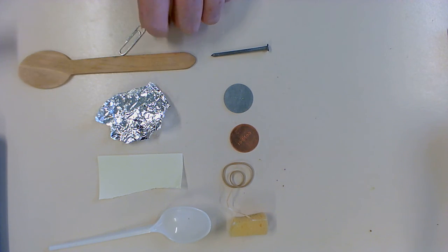So there were two objects, clearly, that are magnetic, that were attracted to the magnet. Did you notice something about the metals? Were they all magnetic or not?